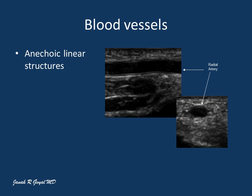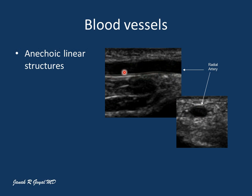The blood vessels are anechoic linear structures. Here is the radial artery on the longitudinal scan, and here is the radial artery on the short axis scan. You can also see a small hypoechoic lining, which is the endothelial lining showing up.